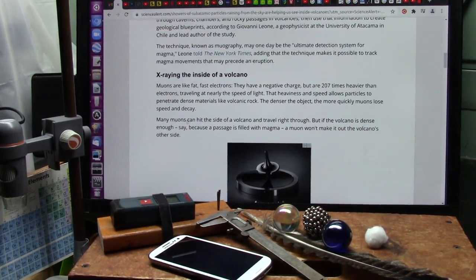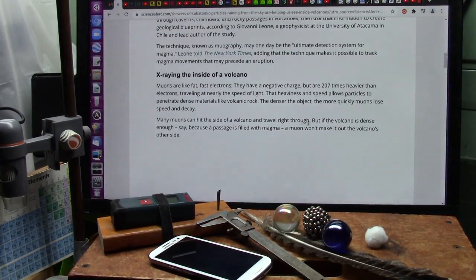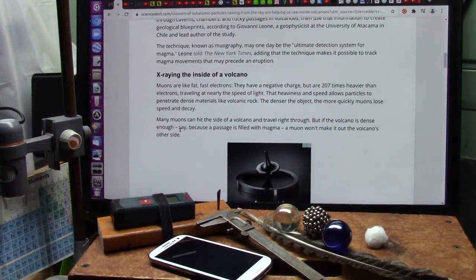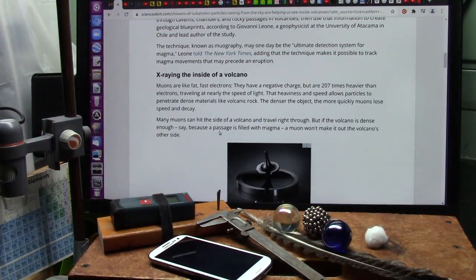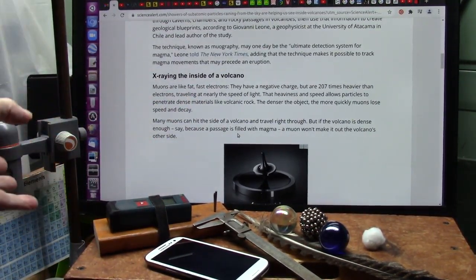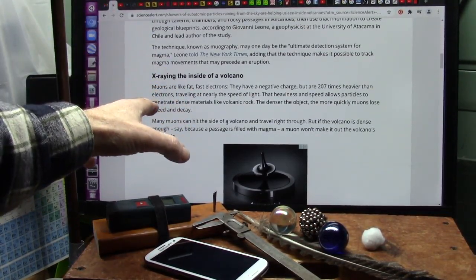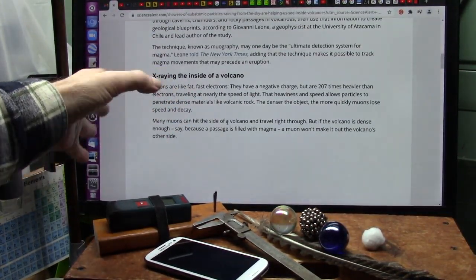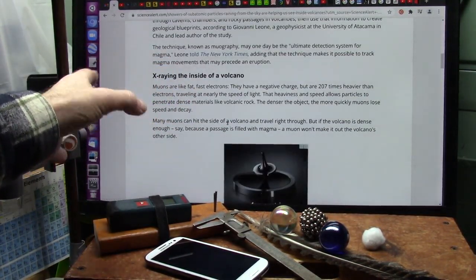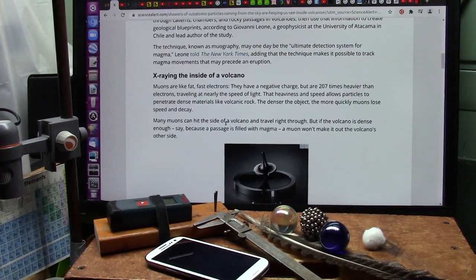The denser the object, the more quickly the muons lose speed and decay. Many muons can hit the side of a volcano and travel right through it. But if the volcano is dense enough, say because a passage is filled with magma, a muon won't make it out the volcano's other side. Magma is extremely hot fluid rock. Now, what is electrons? What is heat? What is that they're talking about, these muons? The thing is, we have to go right back to the beginning again and start with heat.